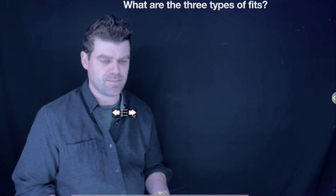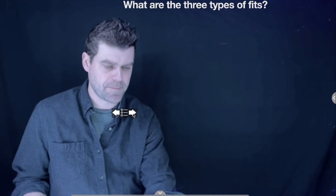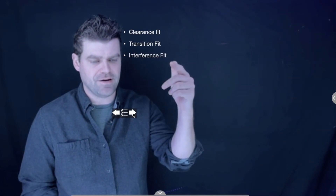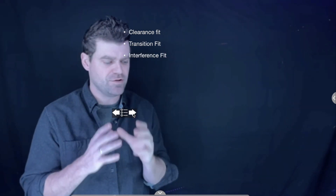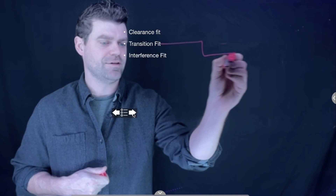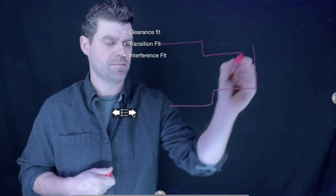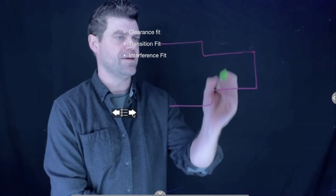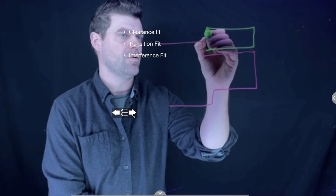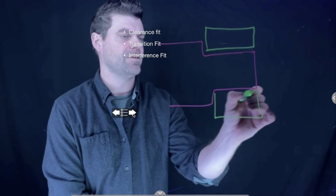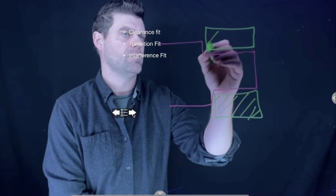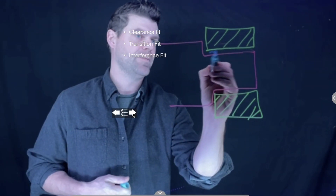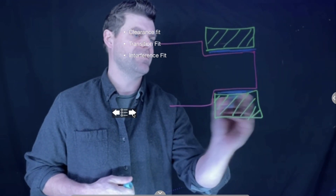The three basic types of fits are a clearance fit, a transition fit, and an interference fit. A clearance fit means that between two parts there is actually a gap or a void — so if we have a shaft machined to a certain size and we place a bushing on the end, if there is an allowance or room in there, that is a clearance fit.